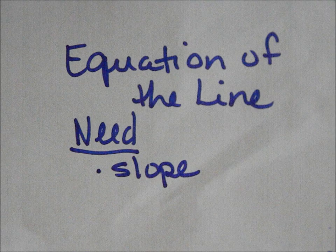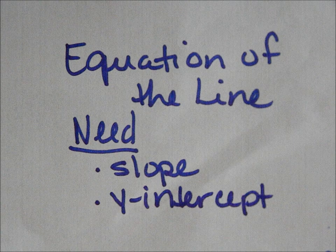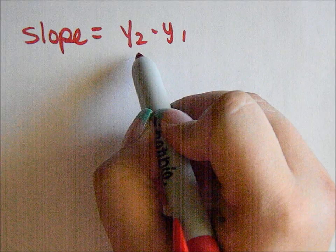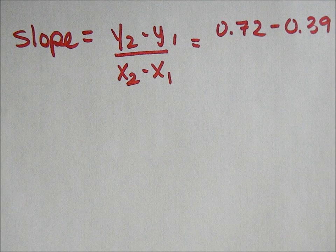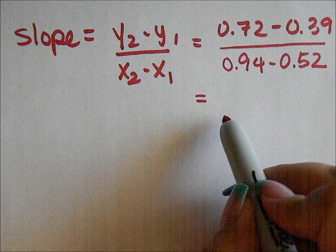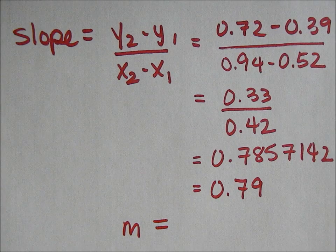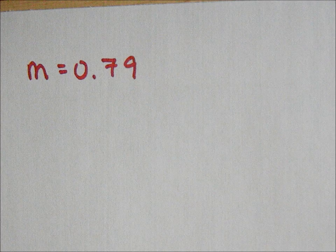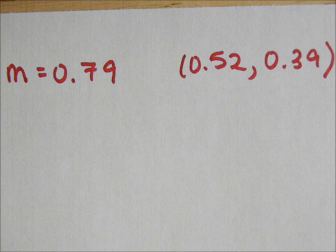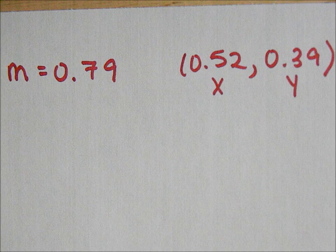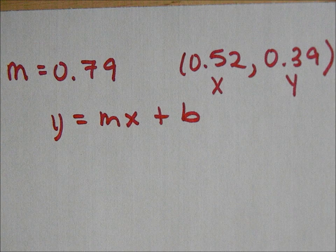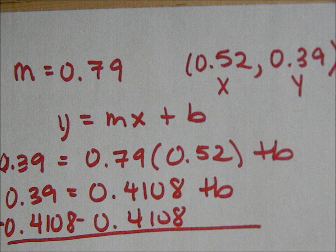To find the equation of the line, we need to find the slope and the y-intercept. We will take the two points that we picked and use the slope formula to calculate the slope. Once you've substituted your points into the formula, calculate the slope out to two decimal places. Once you have your slope, pick one of the points that you used. Use the x and y coordinates along with the slope to substitute into the linear equation y = mx + b. Simplify and solve for b.